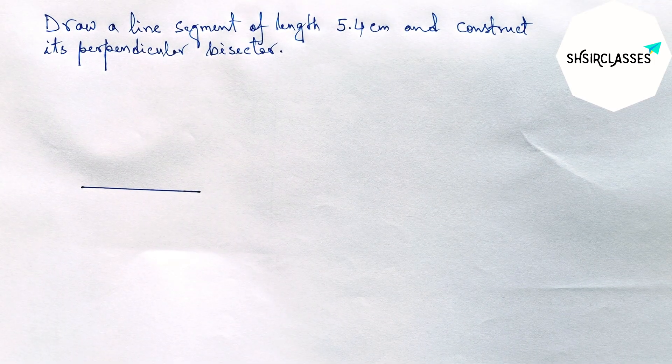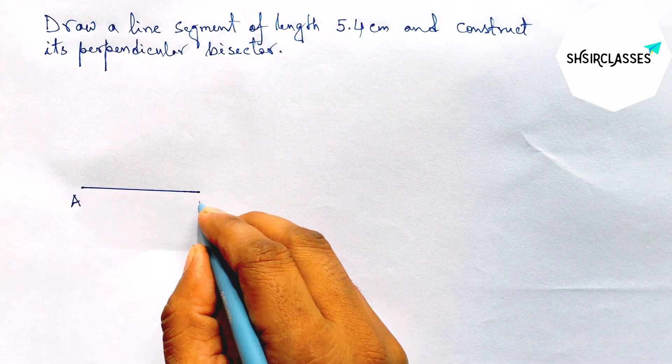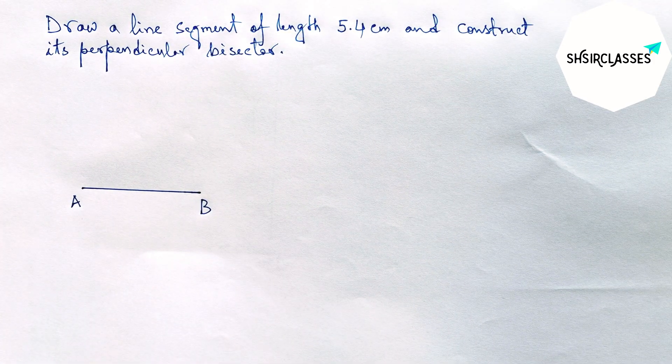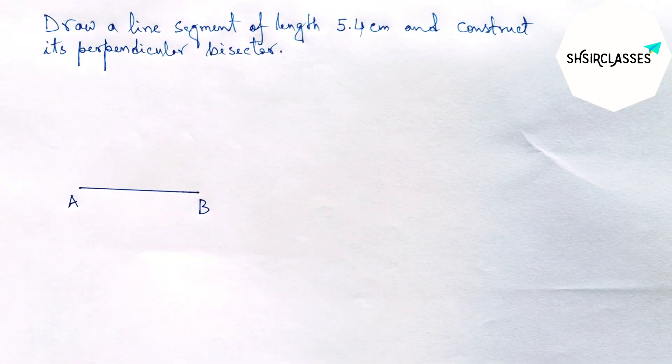Okay, next labeling here two points, so taking here A and B. Next construct its perpendicular bisector to the line AB.